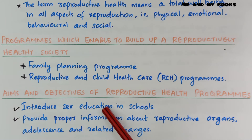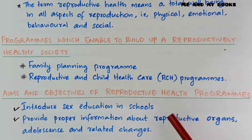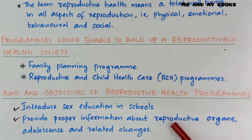The aims and objectives of reproductive health programs include: first, introduction of sex education in schools; and second, providing proper information about reproductive organs, adolescence, and related changes.